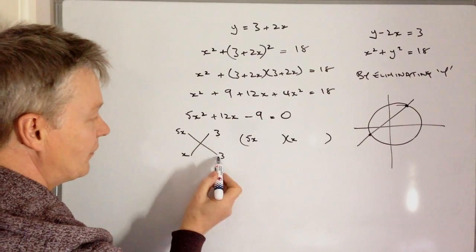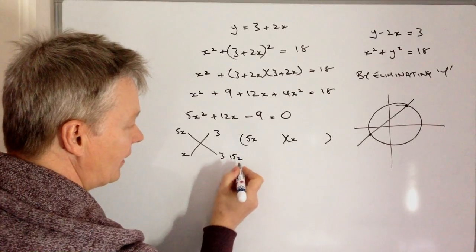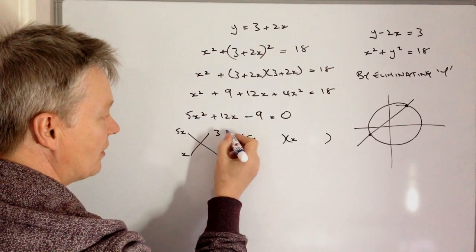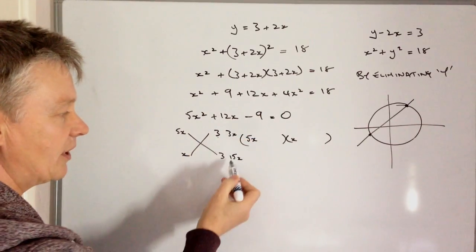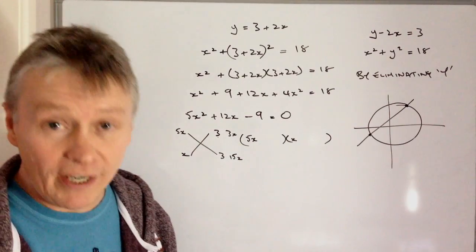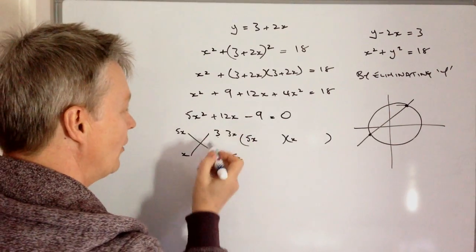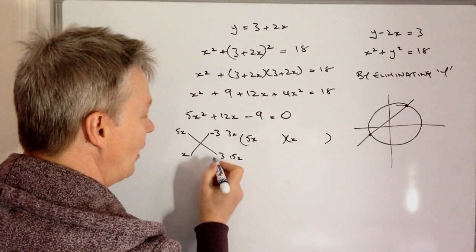Well, 5 times 3 is going to be 15x, and x times 3 is going to be 3x.